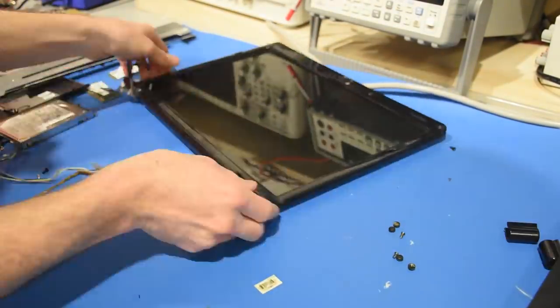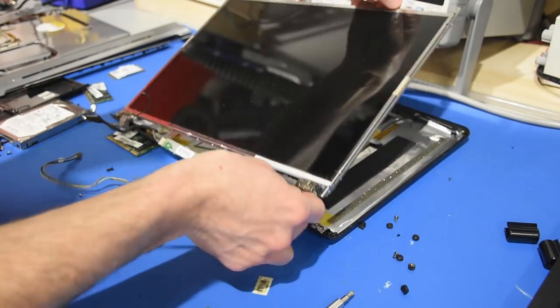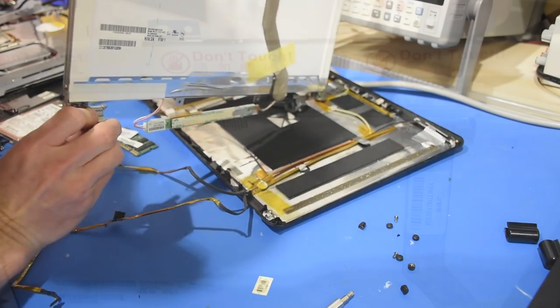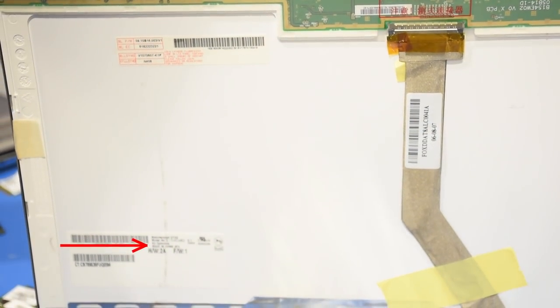Once that was loose, it was more unscrewing. Aha, there it is. Wow, that's pretty thin, so I guess I won't touch this part. Now the model number for the screen is located right here.